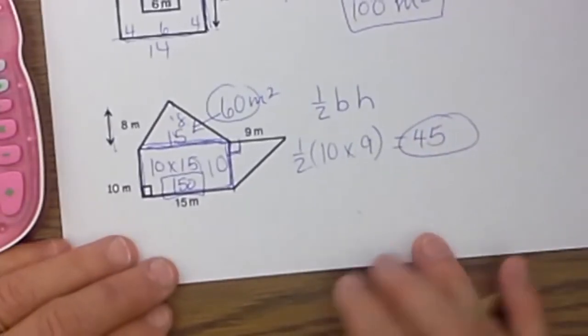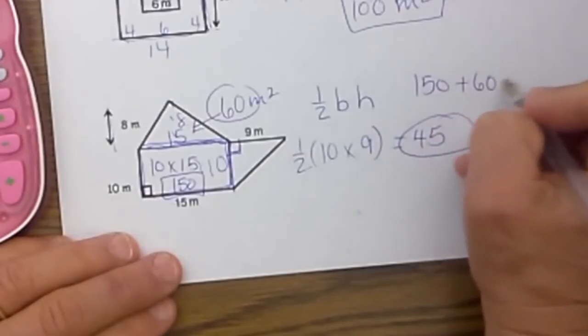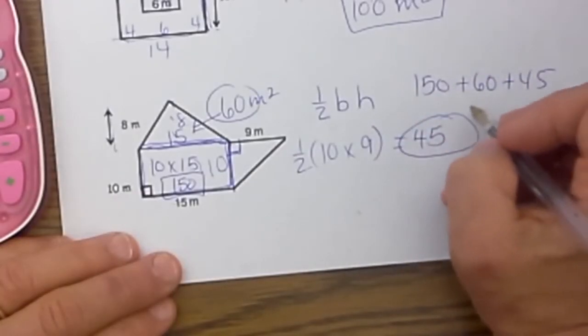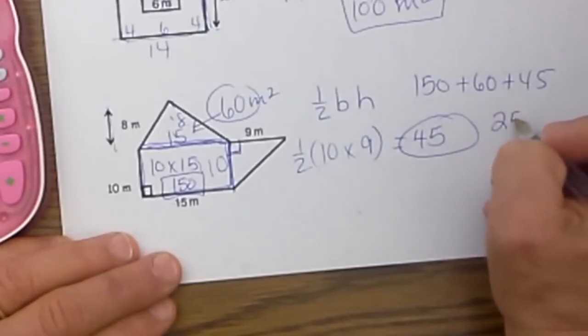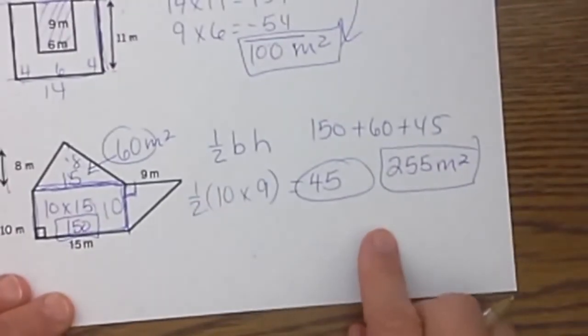Now let's add those up. 150 plus 60 plus 45, let's see that is 105, so that is 255 square meters. That is our answer to this problem.